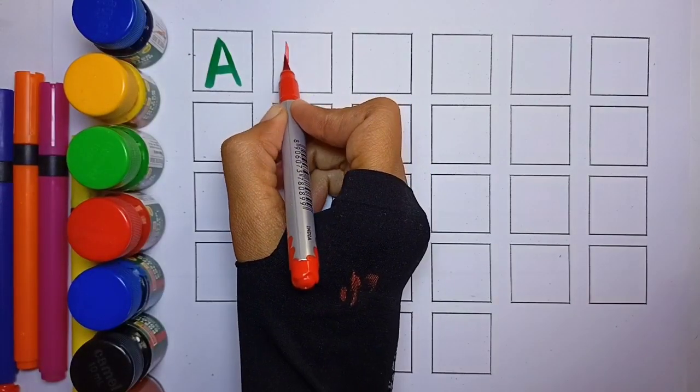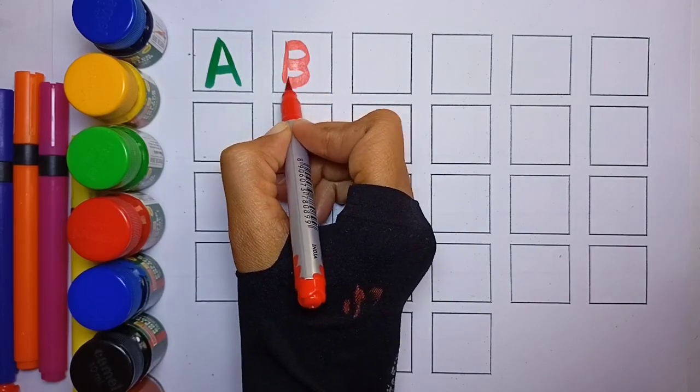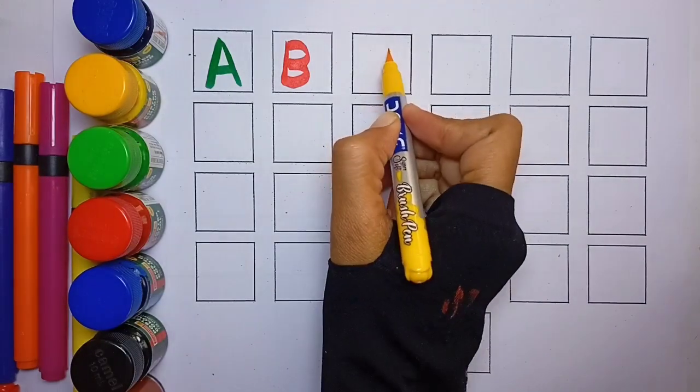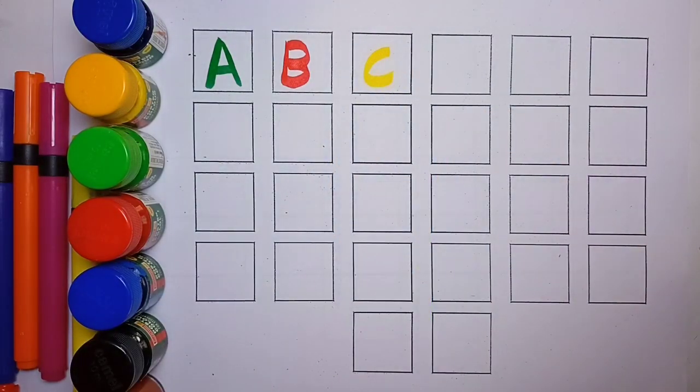B, B for Ball, red color. C, C for Cat, yellow color.